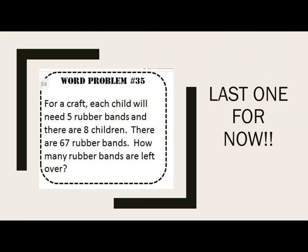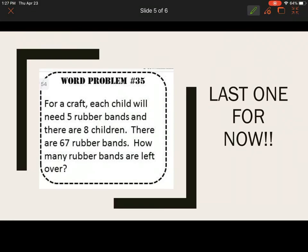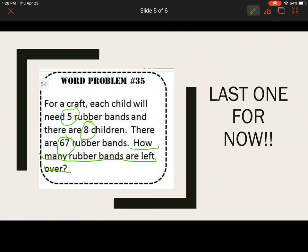Let's do the last one together. For a craft, each child will need five rubber bands and there are eight children. There are 67 rubber bands. How many rubber bands are left over? Circle the numbers: 5, 8, 67. Underline the question: How many rubber bands are left over? The keywords I see are 'each' and 'left.'